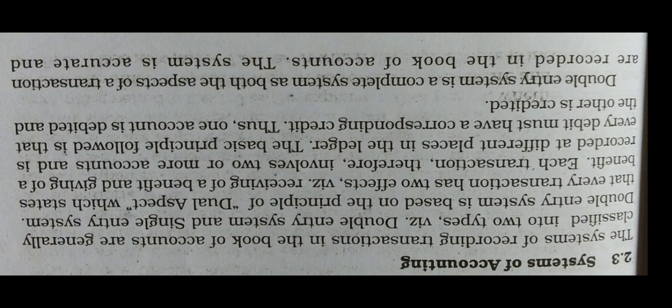Incomplete records is a system in which some transactions are recorded with all their proper debits and credits, whereas in some other cases no entry or only one side of a transaction is recorded. Generally, records of cash and personal accounts of debtors and creditors are properly maintained, whereas records related to assets, liabilities, expenses, and revenues are not recorded completely but only partially. According to Kohler, it may be defined as a system of bookkeeping in which, as a rule, only records of cash and personal accounts are maintained. It is always incomplete double entry, varying with the circumstances.